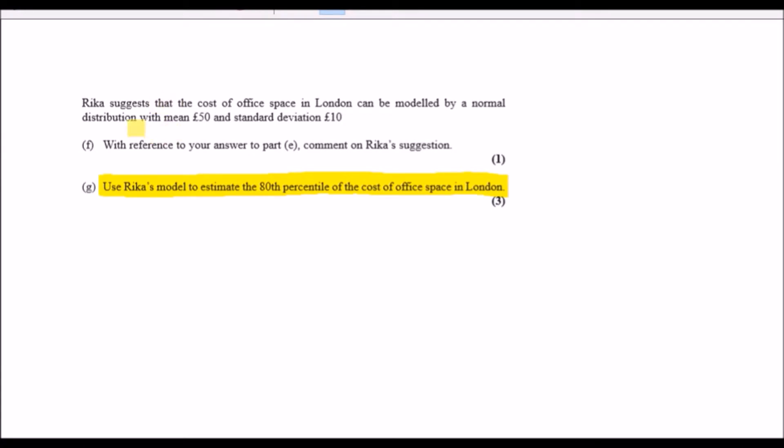Okay, here we go. Normal distribution. Rica suggests that the cost of office space in London can be modeled by a normal distribution with mean 50 and standard deviation 10. So first things first, always say that X is normally distributed with a mean of 50 and a standard deviation of 10, or variance of 10 squared. This is always in the format of mu and sigma squared, where mu is the mean and sigma is the standard deviation.